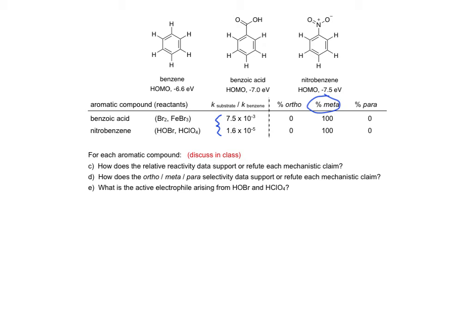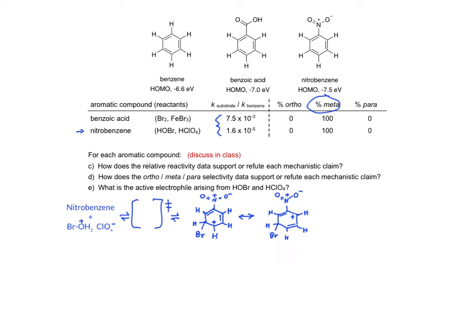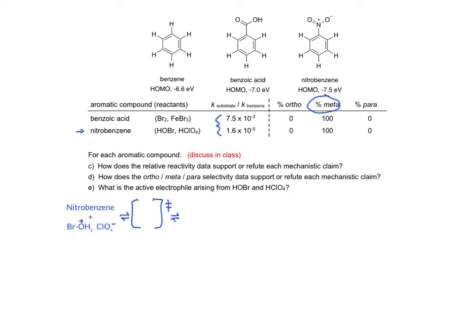With the same analysis for nitrobenzene, we can think about how claim 1 and claim 2 can be applied to give the meta product. This requires a transition state which will put bromine on the meta position, giving a carbocation that is resonance delocalized prior to deprotonation to give meta-bromo nitrobenzene. The second mechanistic claim involves a different transition state and we will get a bromonium ion which can also lead to meta-bromo nitrobenzene.